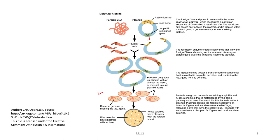The restriction enzyme creates sticky ends that allow the foreign DNA and the cloning vector to anneal. An enzyme called ligase glues the annealed fragments together. The ligated cloning vector is transformed into a bacterial host strain which is ampicillin sensitive and is missing the lac-Z gene from its genome. The bacteria is then grown on media containing ampicillin and X-gal. Only those bacterial cells into which the plasmid has been transferred successfully will survive — this is the basic principle of molecular cloning and its selection process.